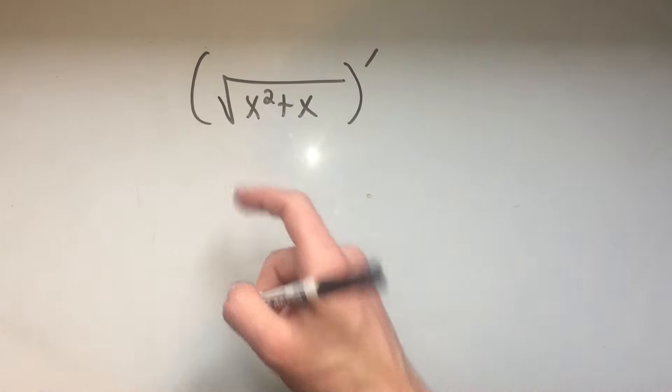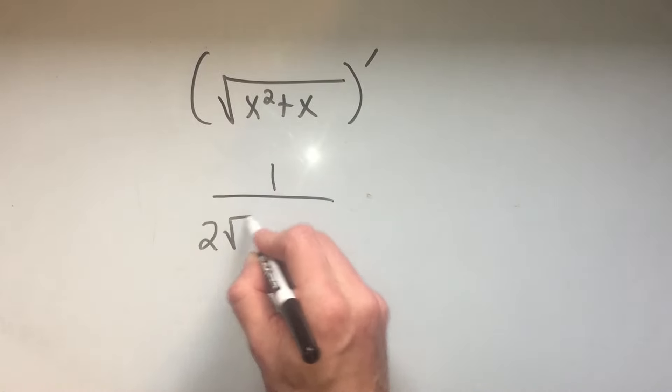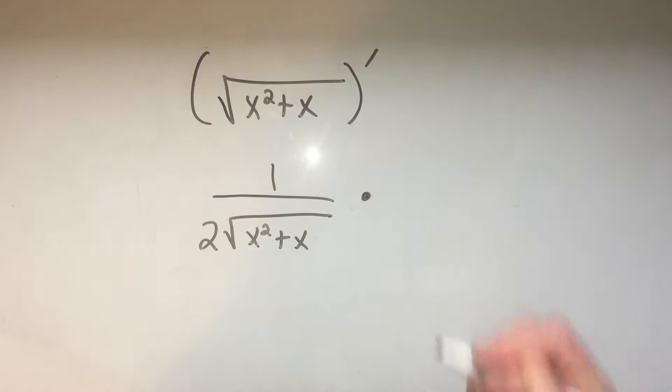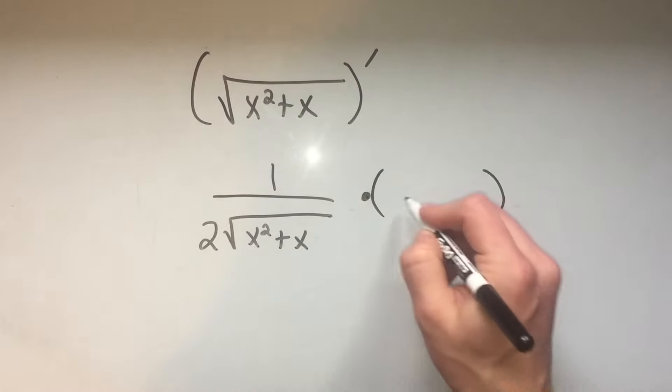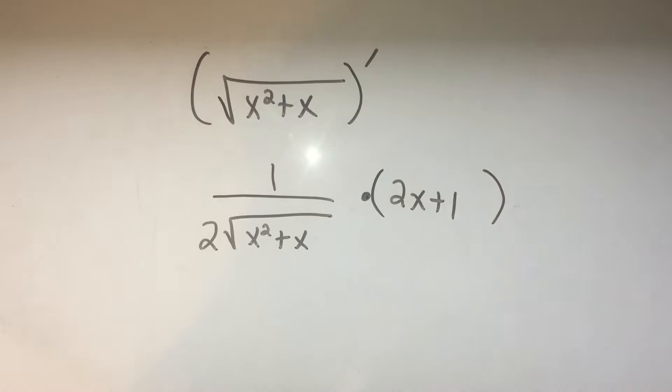So the derivative of a square root is one over two times the square root, and then since there's something on the inside, I'll times by the derivative of the inside by the chain rule. That's how to easily take derivatives of square root functions.